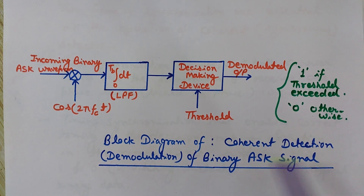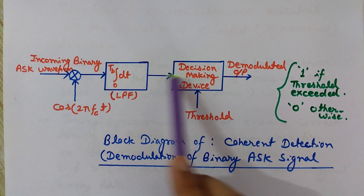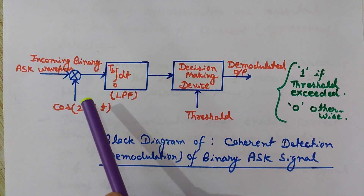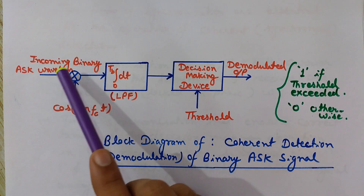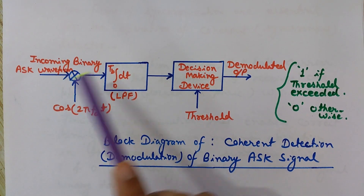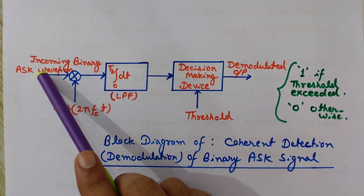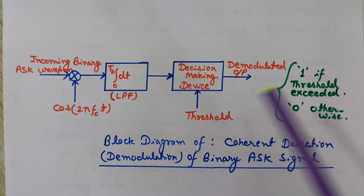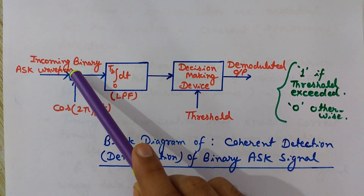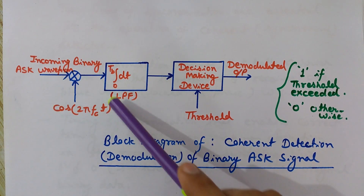This is the block diagram of coherent detection — detection is also known as demodulation — so coherent demodulation of binary ASK signal. We have used three components as mentioned. The product modulator has two inputs: the first input is supplied with the incoming binary ASK waveform, since this is a demodulation process. At the output we will get the binary data. At the other input of the product modulator we have the locally generated carrier wave.